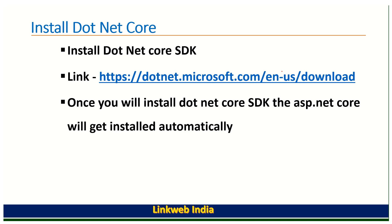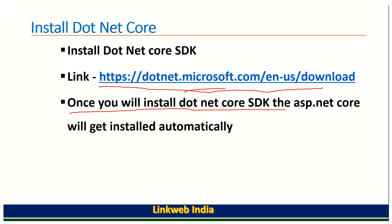For start developing the web APIs, this is the URL: http://dotnet.microsoft.com/en/download. You have to put this URL in the browser and then download the SDK version and install it on your system.